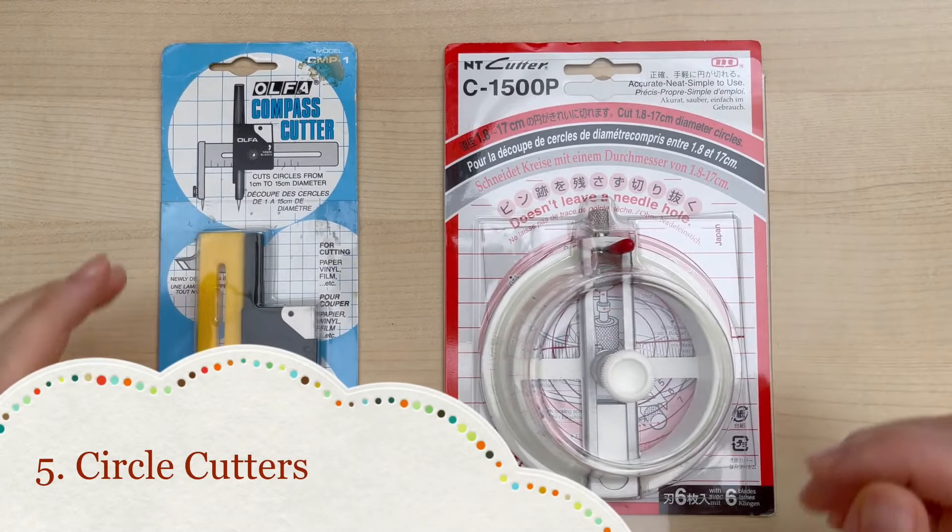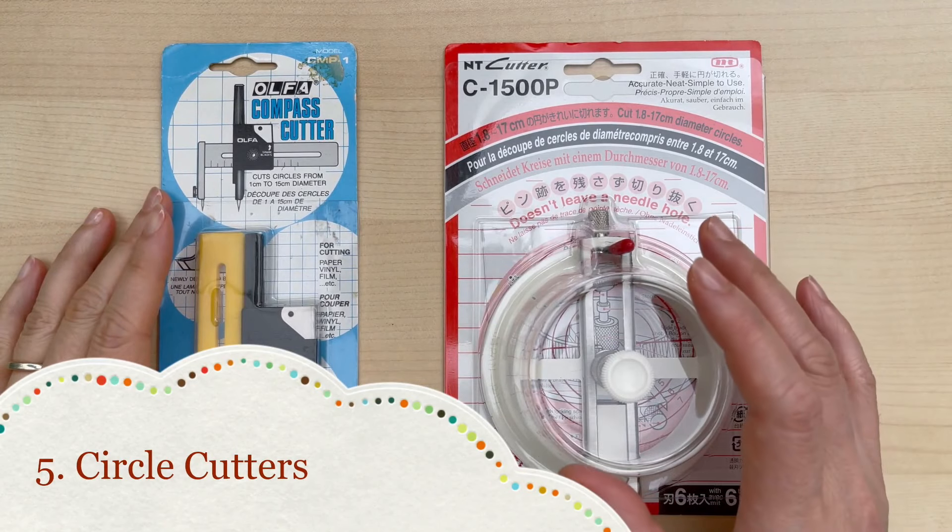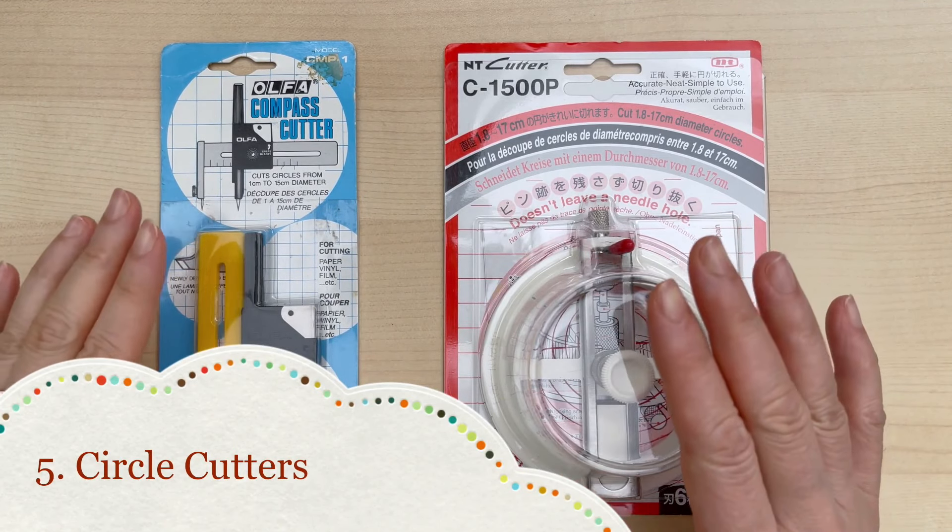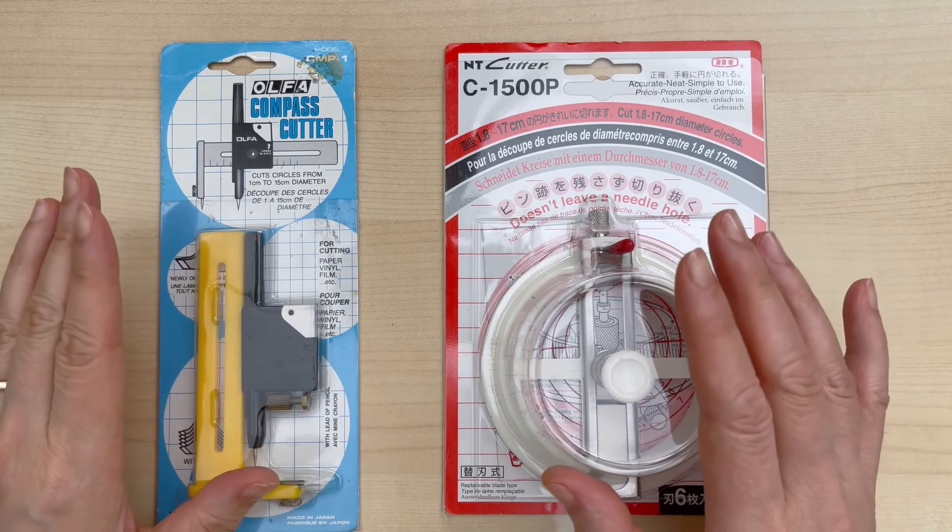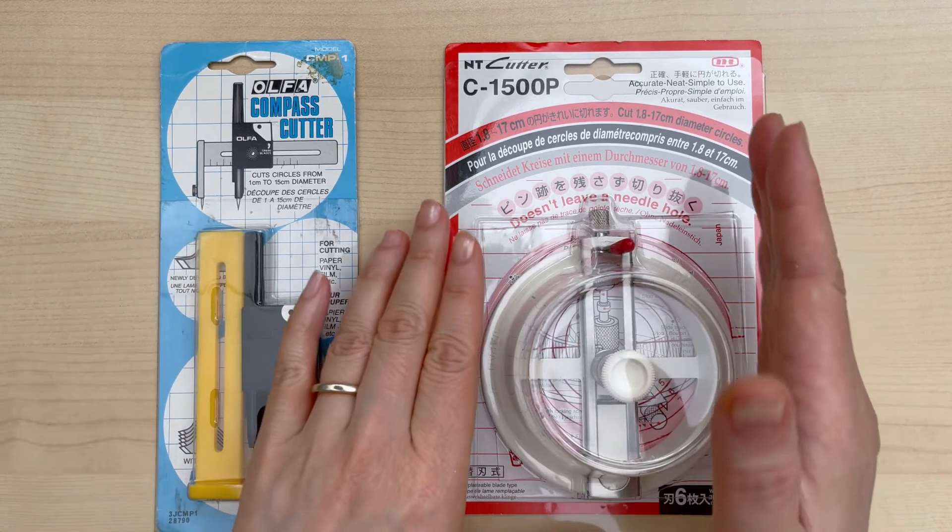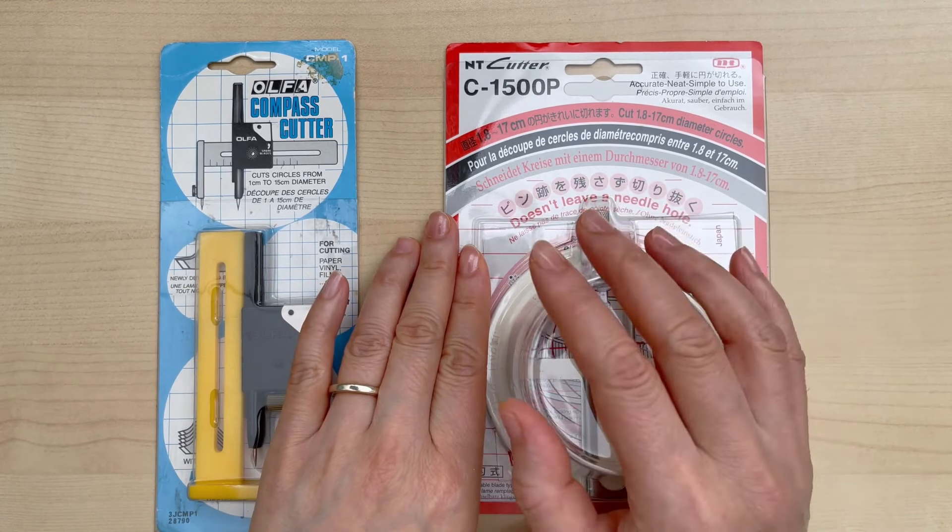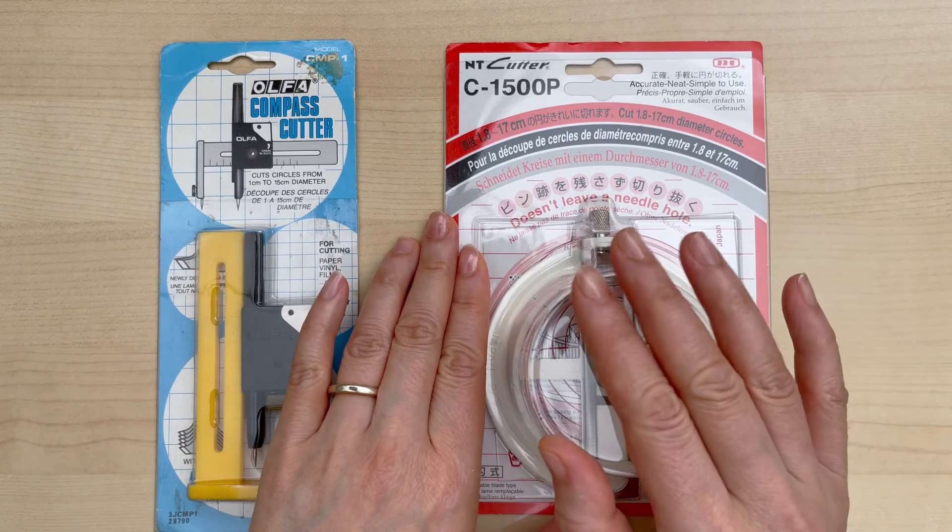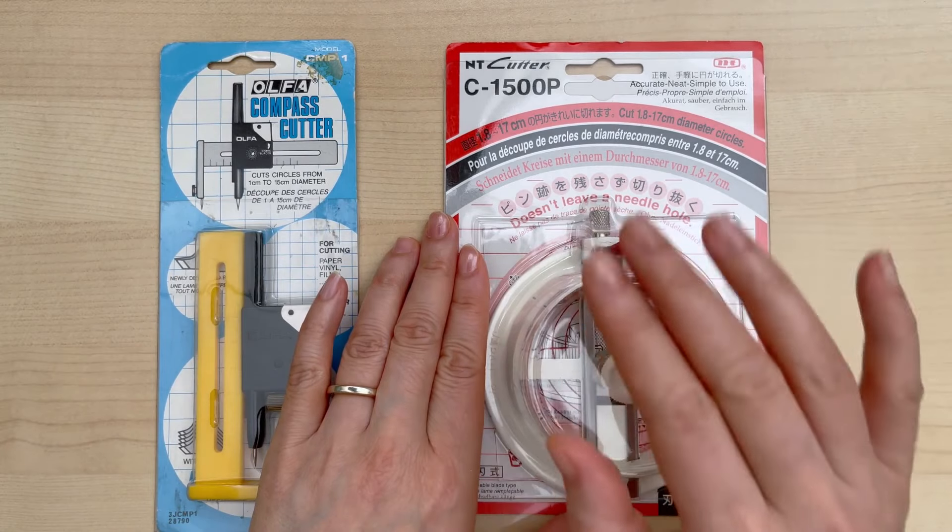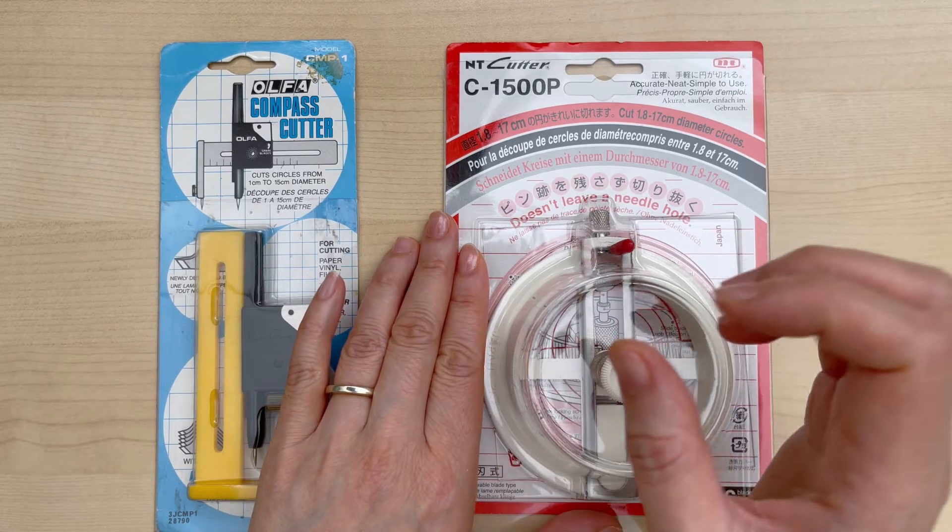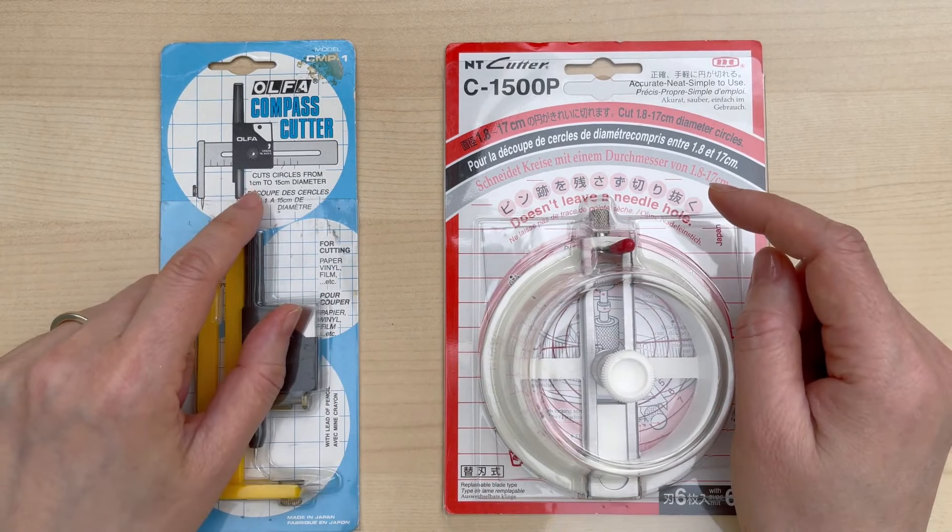For method number five, we can use some circle cutters. And these are two that I've had in my craft room for decades. I love them both, but I actually love the NT cutter the most. This is so strong it can actually cut through mat board, and I've done it with great success. And it does leave a very smooth circle. Let me show you how they both work.